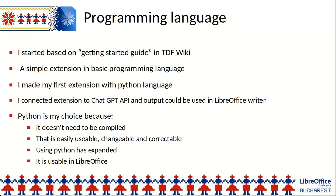Programming language. I started based on a Getting Started guide in the TDF Wiki and created a simple extension with the Basic programming language. After that, I made my first extension with the Python programming language, connected it to the ChatGPT API, and the output could be used in LibreOffice Writer. I am also fluent in Java, and Java is usable in LibreOffice. My choice for creating the AI extension was Python because Python is easily usable, changeable, and correctable. Python usage has expanded and this programming language is usable in LibreOffice.